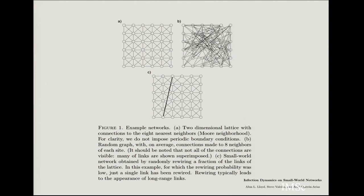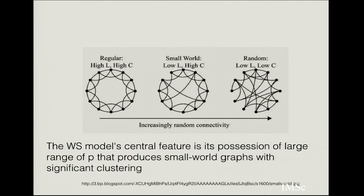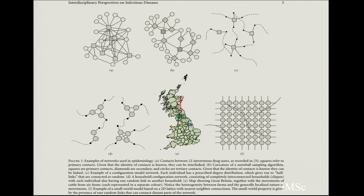Here is the implementation in two dimensions: you take a 2D lattice connected to nearest and next-nearest neighbors, then add some fraction of long-range connections — for example, connecting a node all the way across the lattice. The central feature of the Watts–Strogatz small world network is that it has a large range of p that produces small-world graphs with significant clustering. This looks most like social networks, which are significantly clustered: we each have a small group we interact with regularly, defining a local network structure, but we also have connections to people who stay far away but are still connected to us on a personal level.